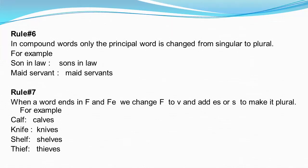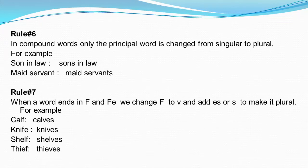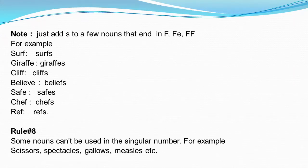Rule 6: In compound words, only the principal word is changed from singular to plural. For example, son-in-law — the principal word is son, so we write sons-in-law. Maid-servant — the principal word is servant, so we write maid-servants. Rule 7: When a word ends in F or FE, we change F to V and add ES or S to make it plural. For example, calf — calves, knife — knives, shelf — shelves, thief — thieves. Note: Just add S to a few nouns that end in F, FE, or double F. For example, surf, giraffe, cliff, safe, chef, ref.